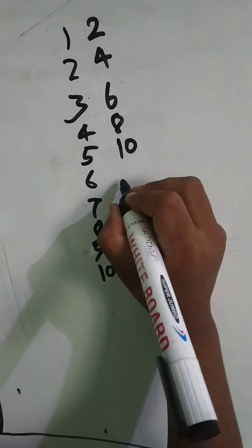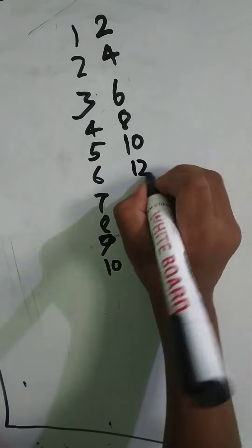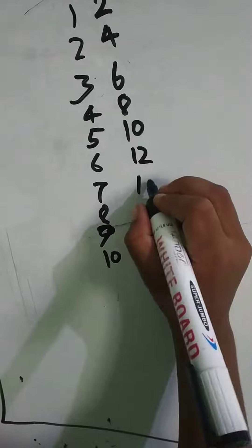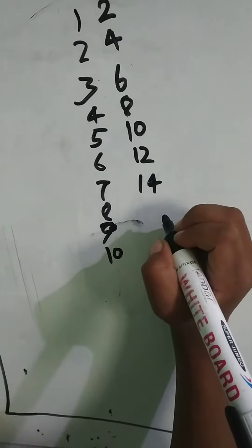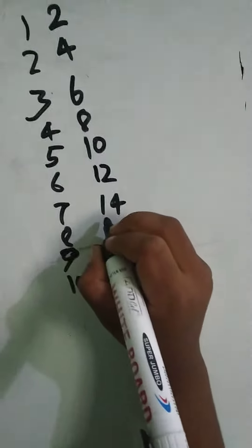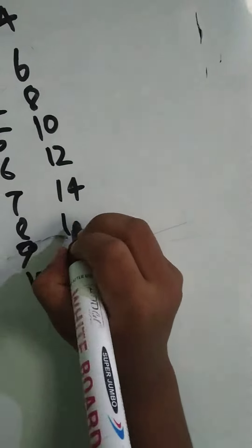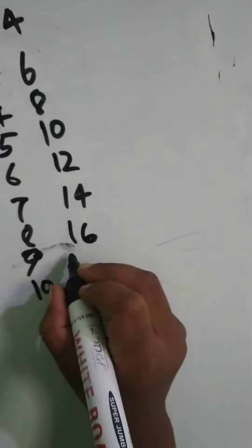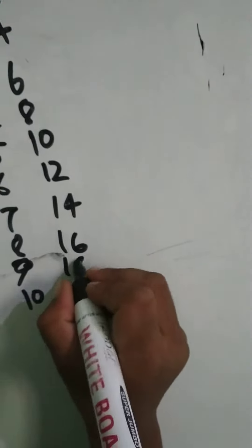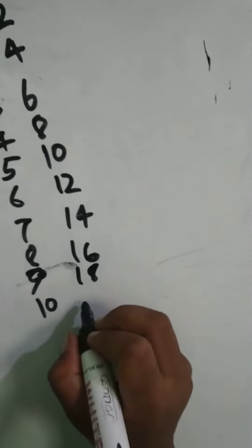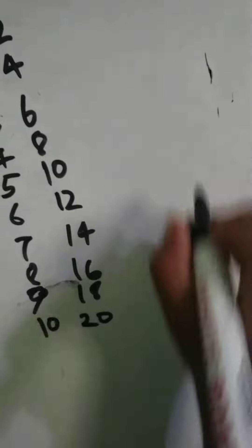2 times 7 equals 14, 2 times 8 equals 16, 2 times 9 equals 18, 2 times 10 equals 20. Now, let's take equal here.